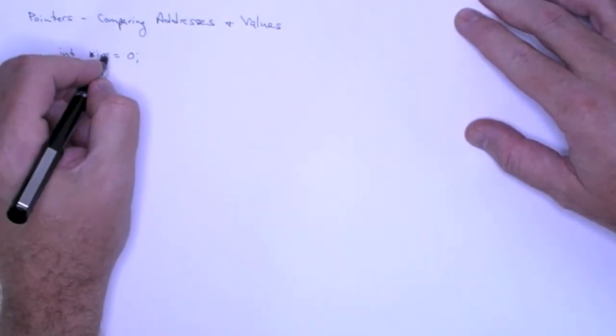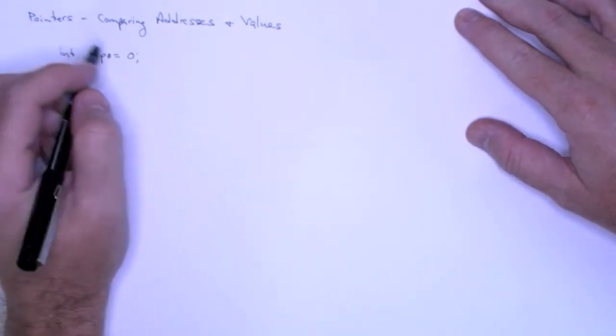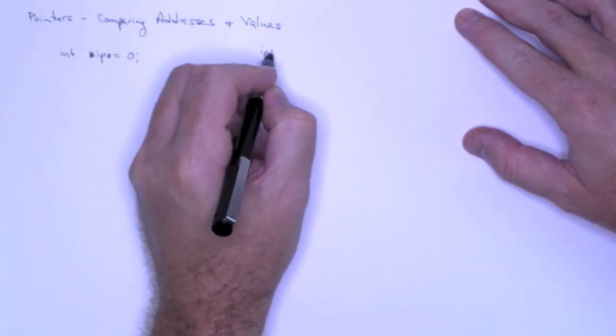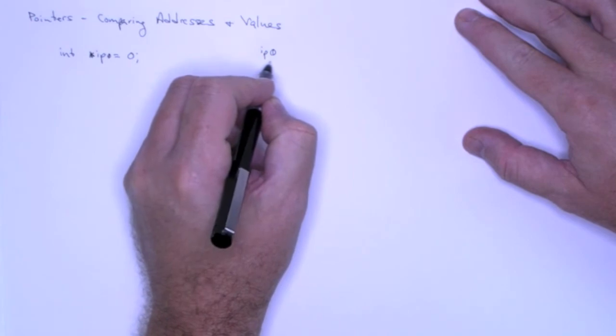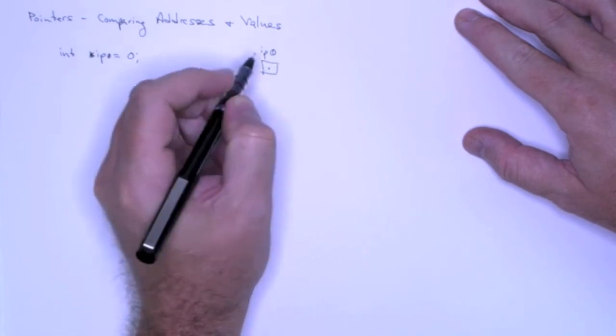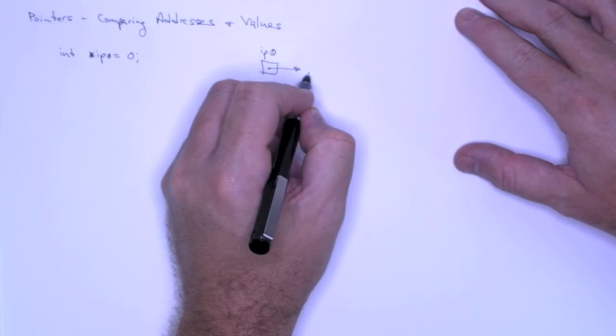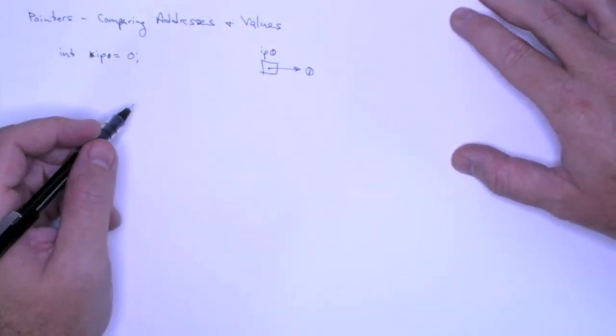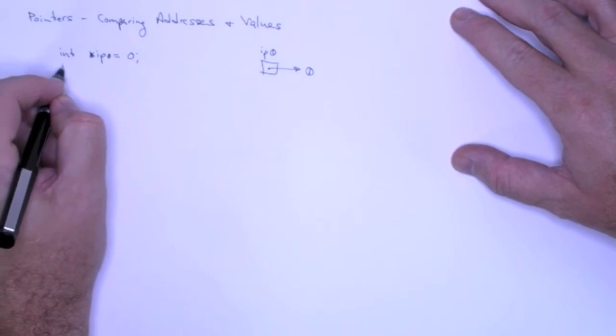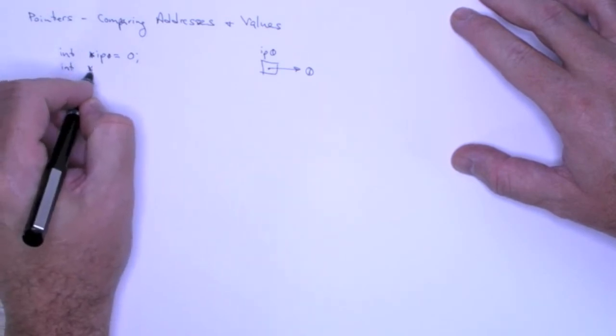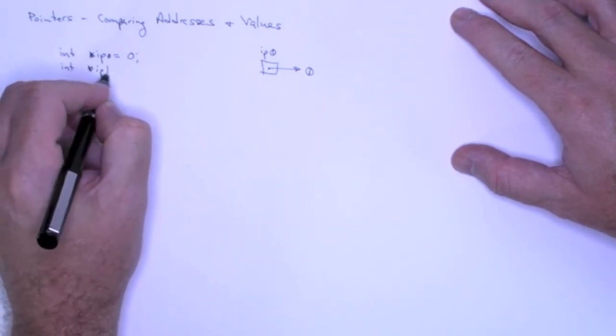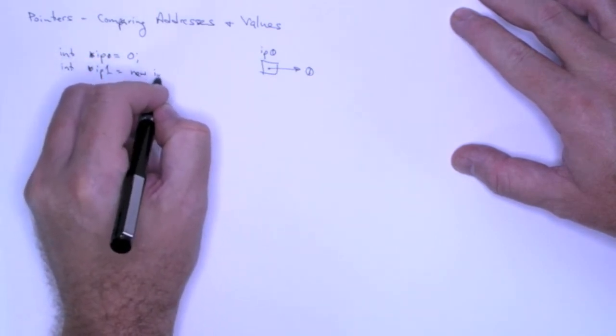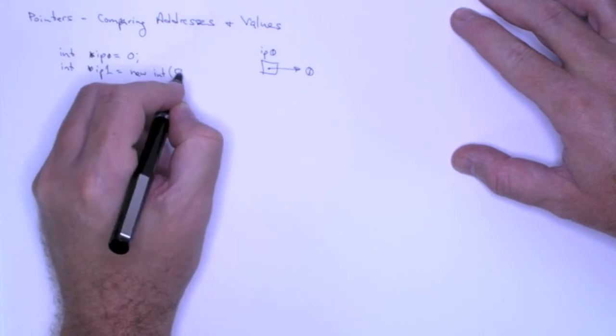So I'm creating a pointer called IP0 and I'm going to assign it to point to null. And in terms of our diagrammatic representation of what's happening in memory, that's what that looks like. Then I can define another IP1 and I'm going to make that point to an integer 5.